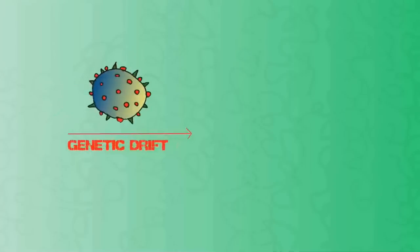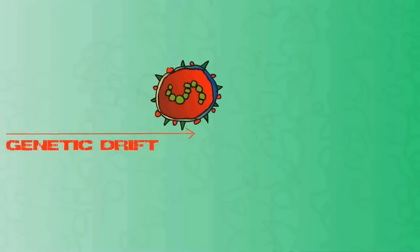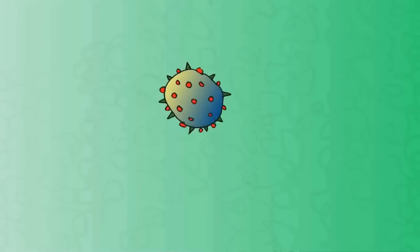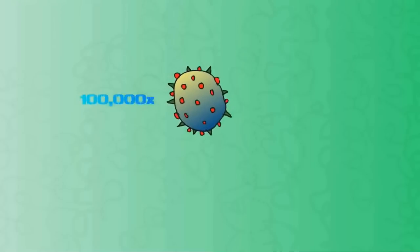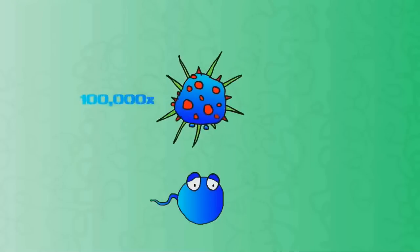Number one, genetic drift, which means the virus's genetic code slowly changes over time. The influenza virus is mutated at a rate of about 100,000 times more than your eukaryotic cells.